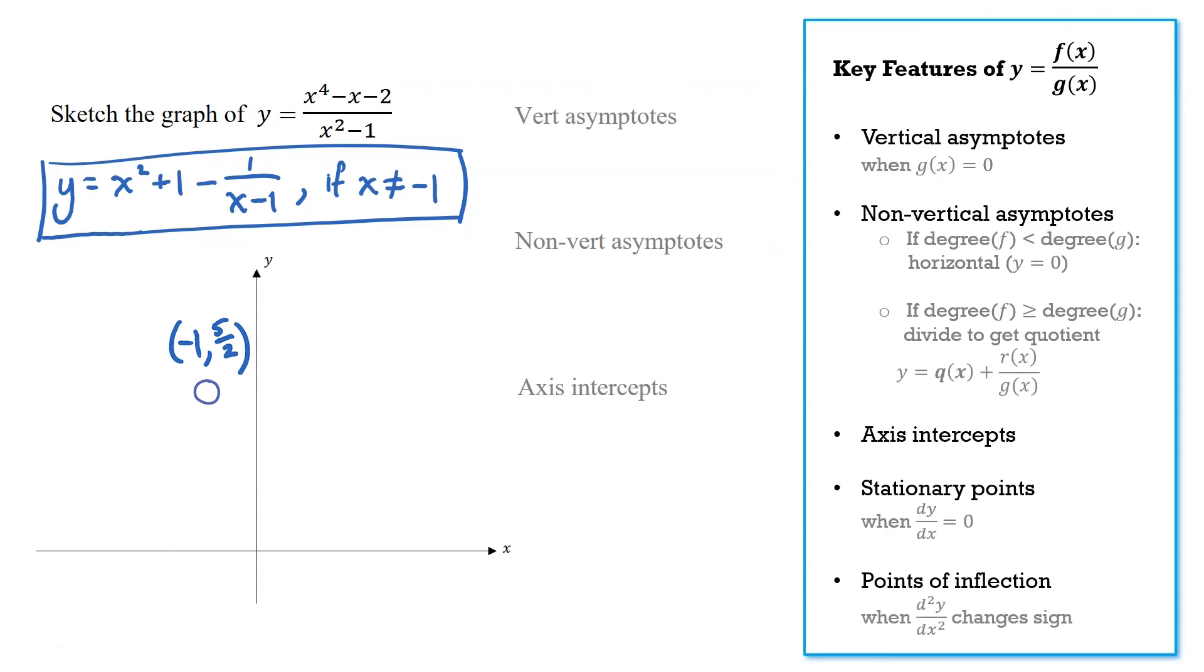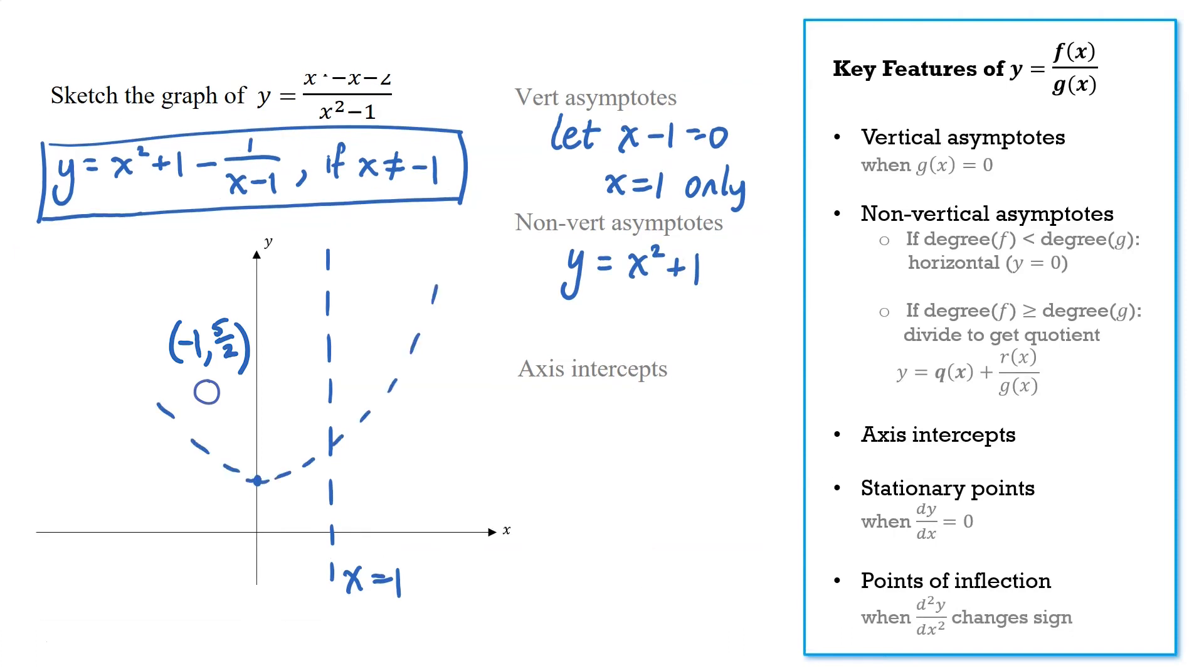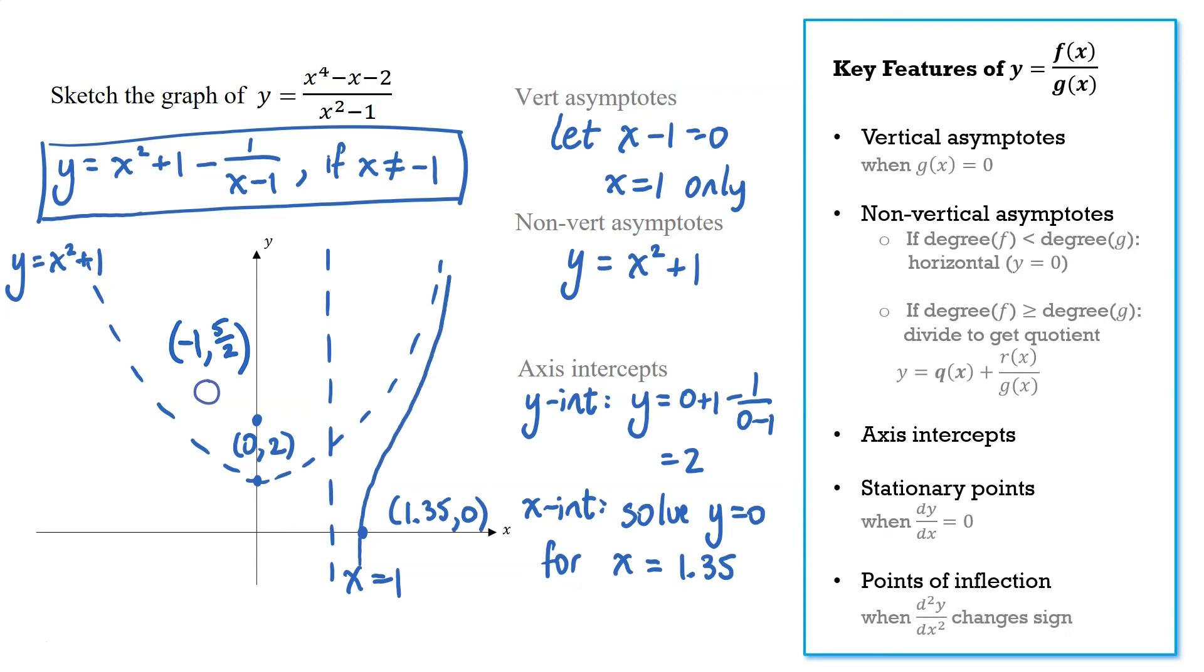Let's keep going with the rest of the graph now. The vertical asymptote, that's when x minus 1 is 0, so x equals 1. And the non-vertical asymptote, that's our quotient, y equals x squared plus 1. So actually to the left and right we're going to approach a parabola. For the intercepts, we'll first let x equals 0. We can calculate that y equals 2. And for the x-intercept, if we let y equals 0, this equation we'll probably need a calculator to solve that, giving x equals 1.35.